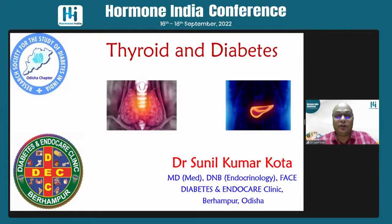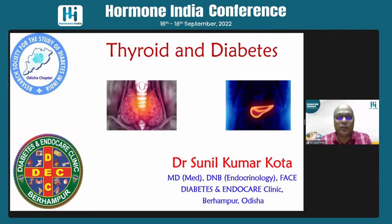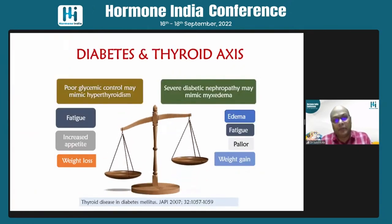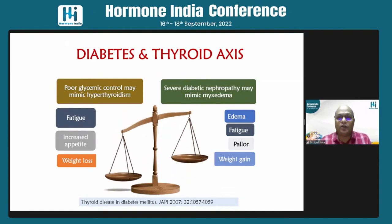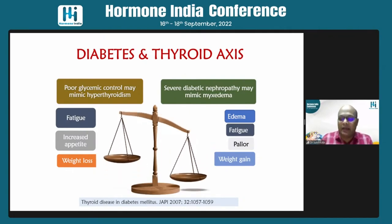If you want to learn about the physiological effects of thyroid hormone, there are multitude. First of all, it acts on the liver to produce more glucose by glycogenolysis and gluconeogenesis. It acts on the intestine to increase the absorption of glucose across the intestinal wall. It acts on the beta cells to make them more responsive towards the ambient glucose, so it acts on insulin secretion. And also it acts on the peripheral tissues to increase GLUT4 expression, so glucose uptake is enhanced. The glycemic control may mimic hyperthyroidism by virtue of fatigue, increased appetite, and weight loss. At the same time, diabetic nephropathy may also mimic myxedema by virtue of edema, fatigue, pallor, and weight gain.